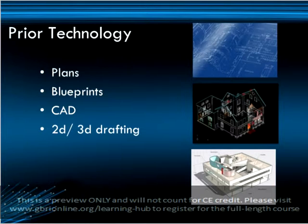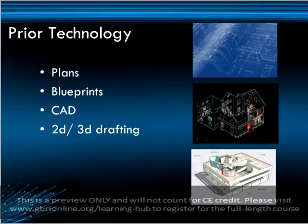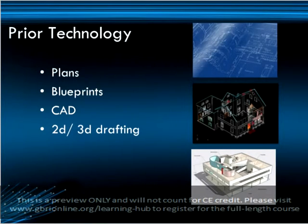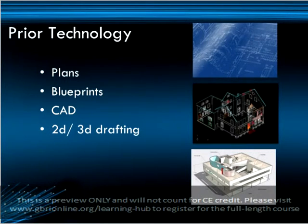CAD programs made technical drafting simpler and allowed for easier sharing of construction documents, but still required that several drawings be altered any time that design changes were needed. Aesthetic representation also became significantly easier with CAD technology, but many designers still used physical models for client representation and to promote the design.